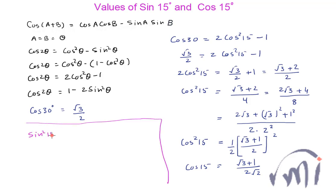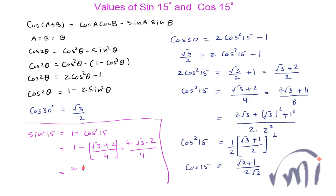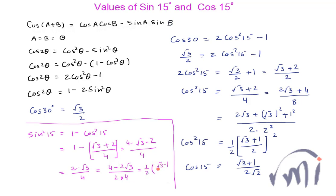Now we can find sin 15. sin²15 equals 1 minus cos²15, and cos²15 was (√3 plus 2)/4. So sin²15 equals 1 minus (√3 plus 2)/4, which equals (4 minus √3 minus 2)/4, or (2 minus √3)/4. Multiplying by 2/2 gives (4 minus 2√3) divided by 8, which equals (1/2) times (√3 minus 1)/2 whole squared. So sin 15 equals (√3 minus 1) divided by 2√2.